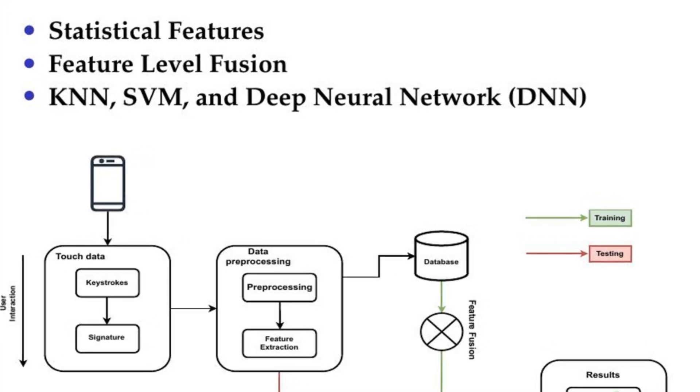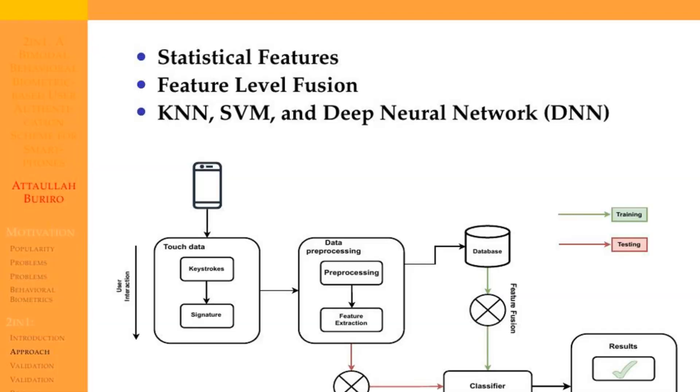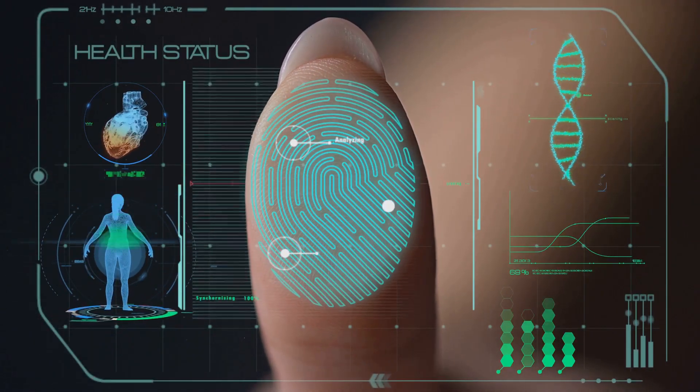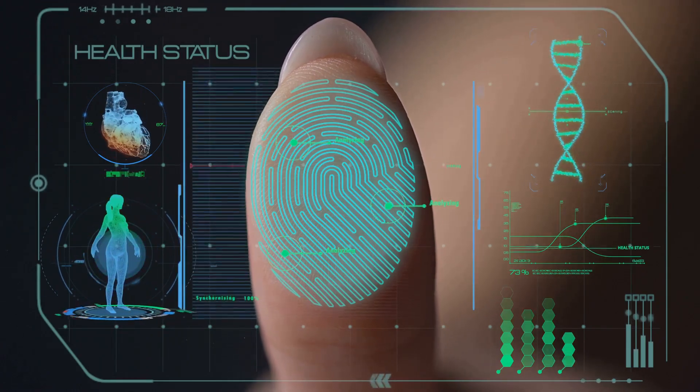Then, we applied three state-of-the-art machine learning classifiers, such as KNN, SVM, and deep neural network (DNN), for our classification task, that is user authentication.